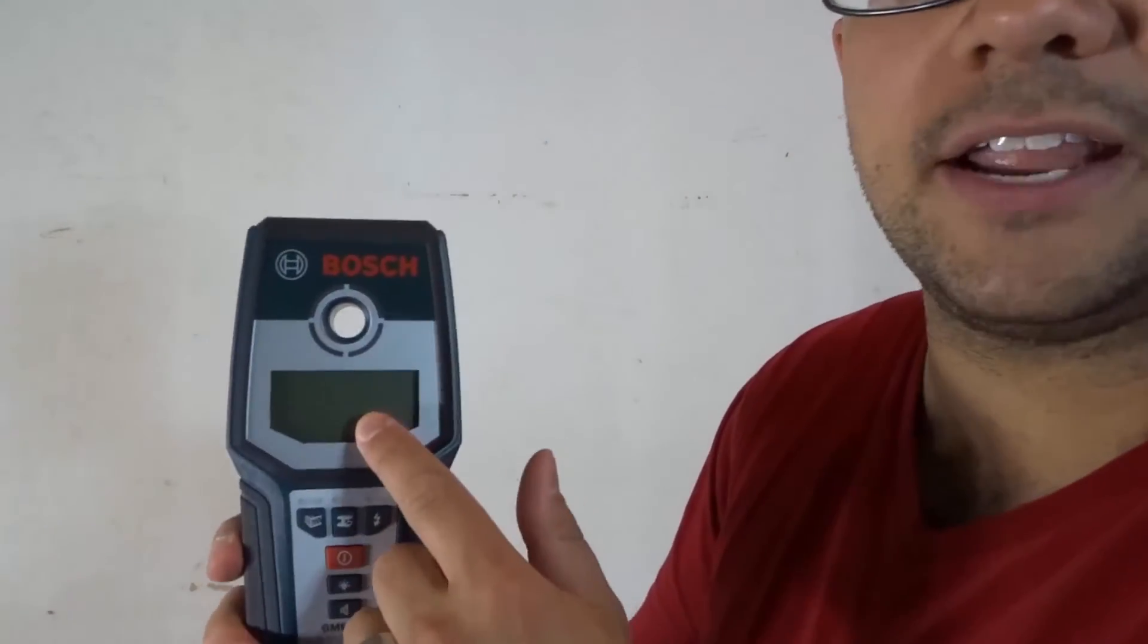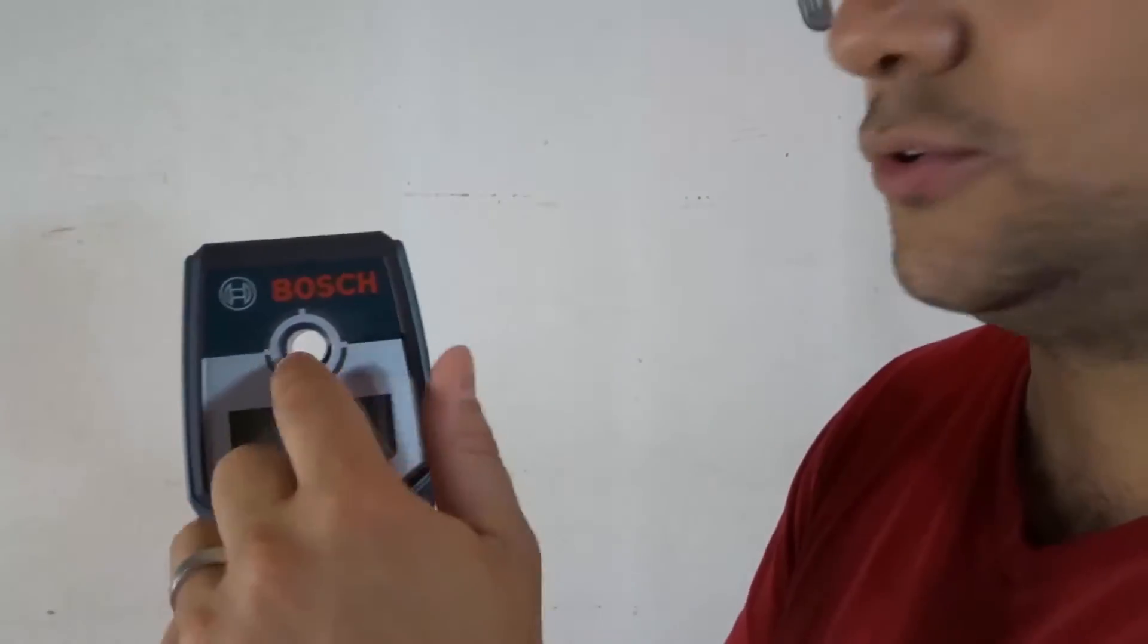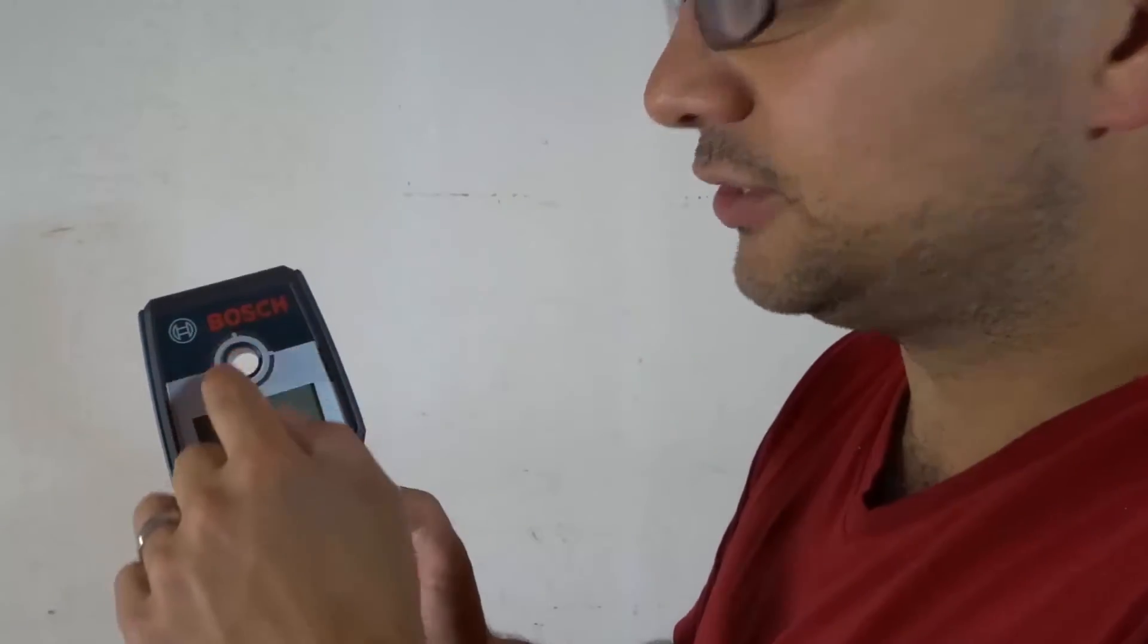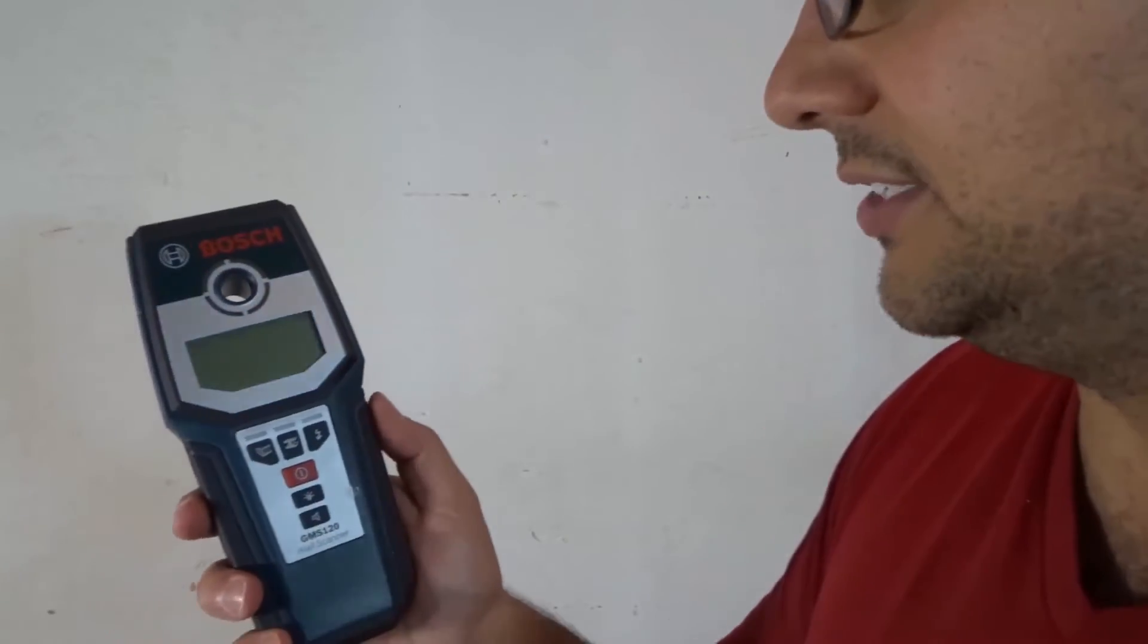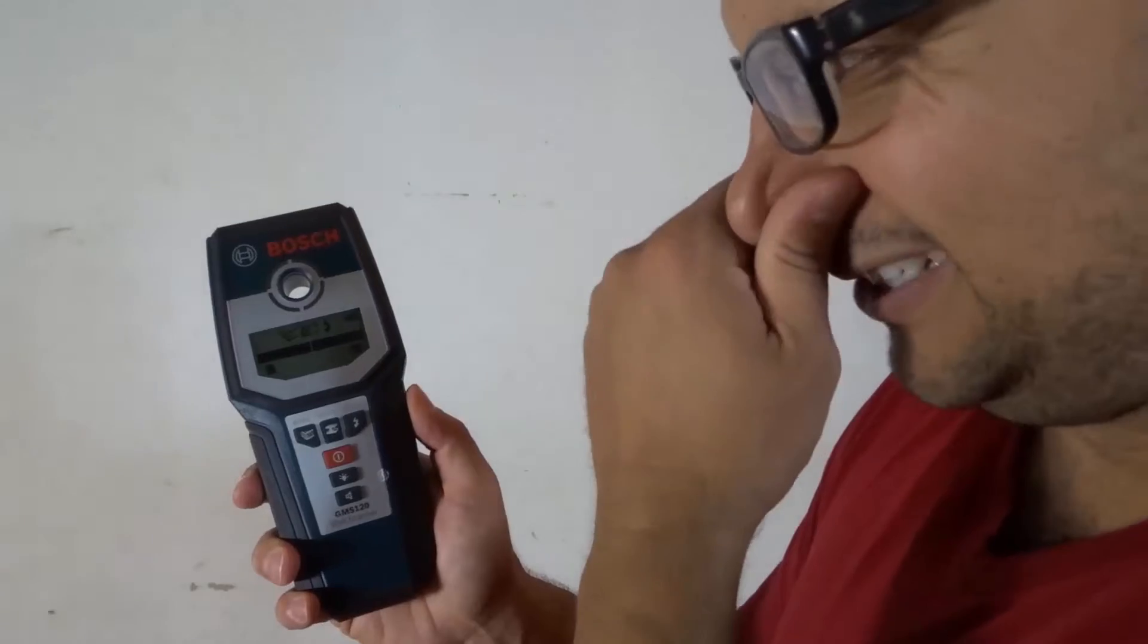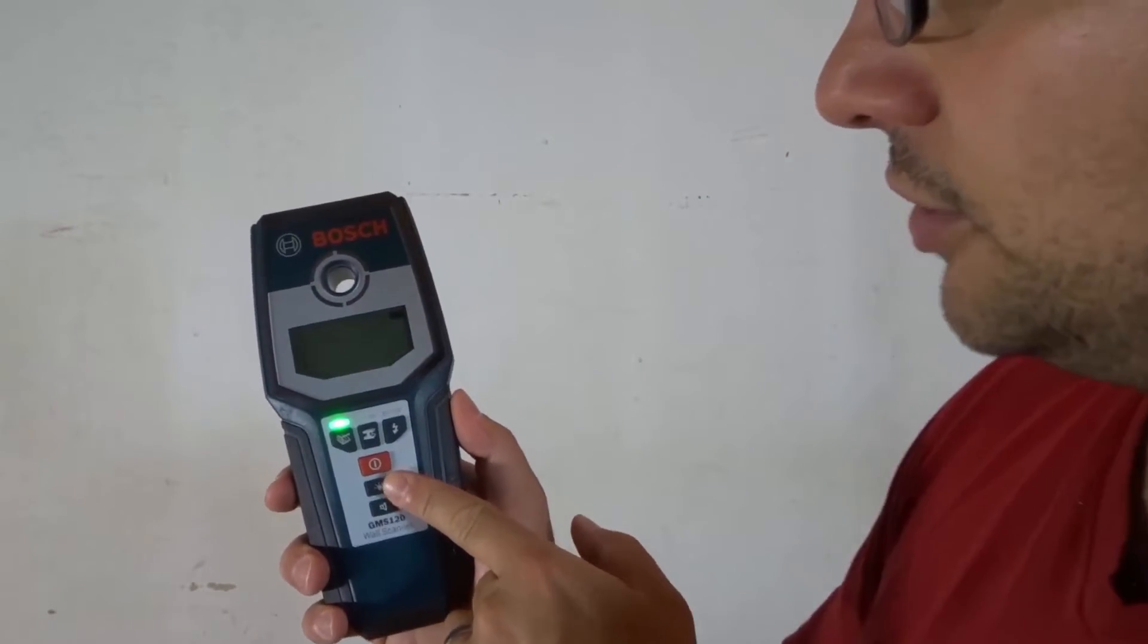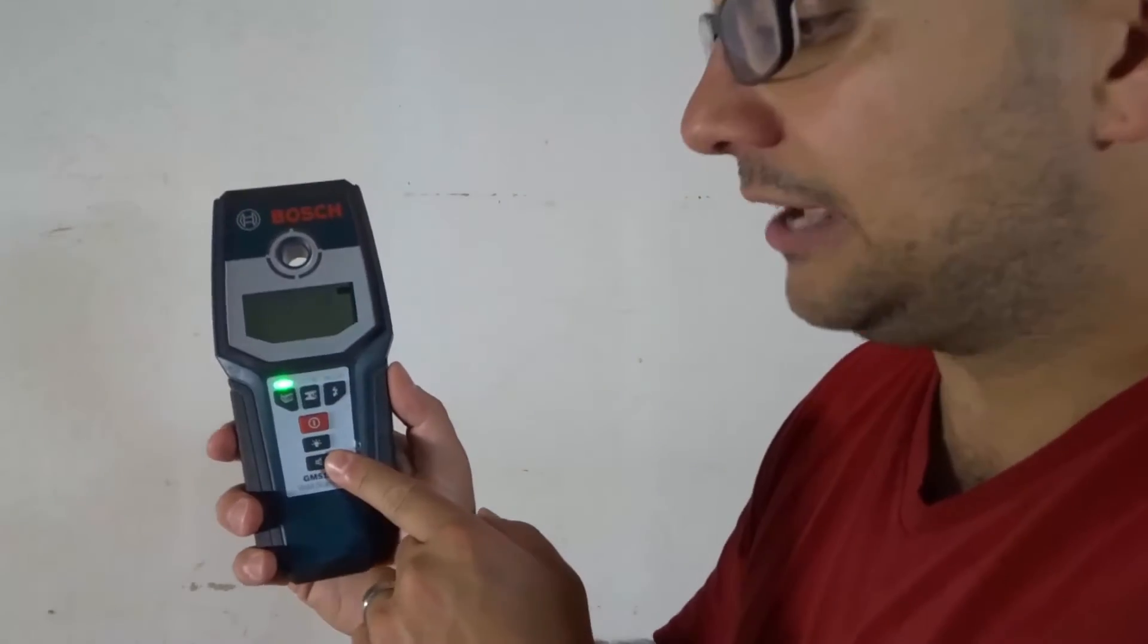You have this display right here. You have a hole that you can use to mark on the wall if you're looking for studs, let's say. And then you have this illumination on these lights right here. Really easy to use. You turn it on. Very simple. This right here allows you to turn the display on and off. This allows you to turn the audio on and off. I've never used them. I like the audio, I like the display, so I just leave them on.